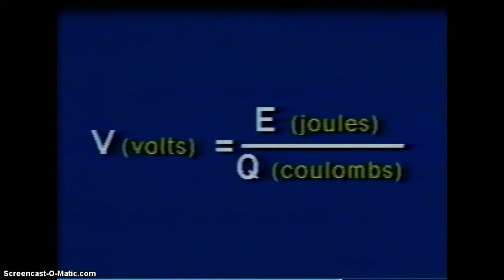So we call the voltage the potential difference. We can also call it the pressure, electric pressure, the force. The reason why a 9 volt battery is stronger than a 1.5 volt battery is that it has 6 times the volts, or 6 times the force. And if you remember from the demos from class with the 9 volt, the bulb is 6 times brighter because of that force — that electric potential difference, the voltage.